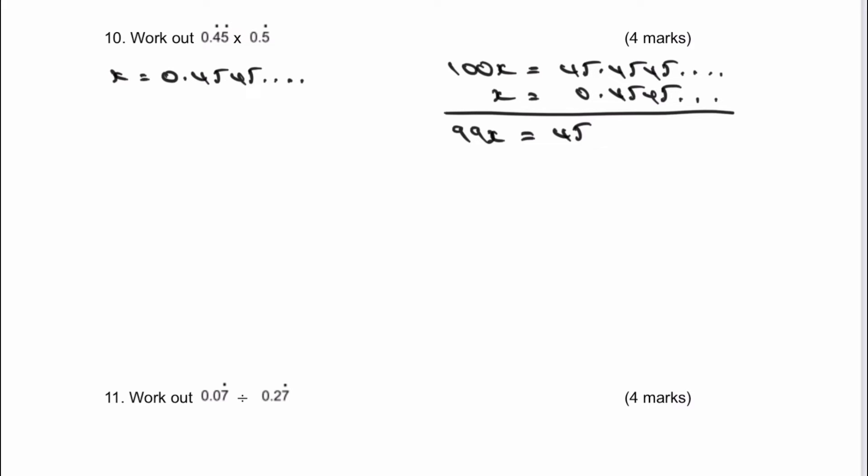Therefore, I need to convert that now to x as a fraction. So if I divide through by 99, I get 45 over 99, and that will reduce to 5 over 11, which is my first fraction as the equivalent to 0.45 recurring.